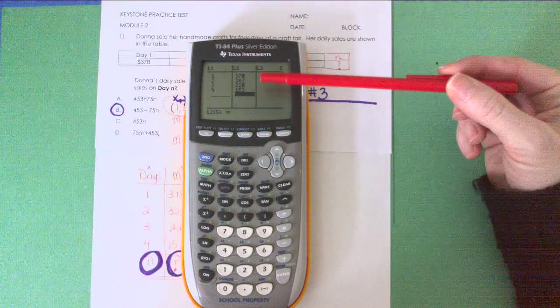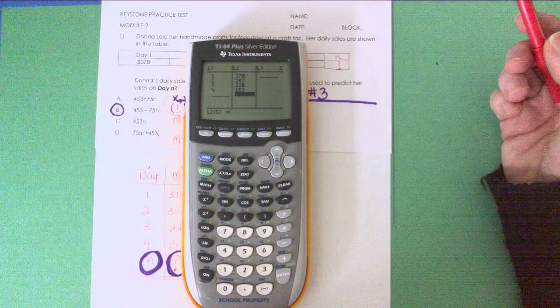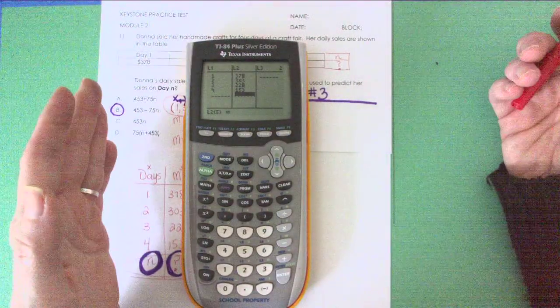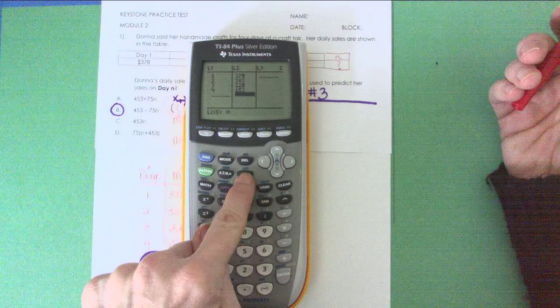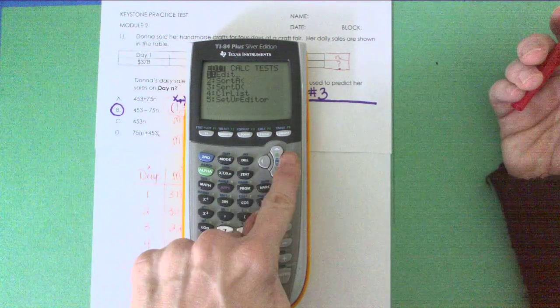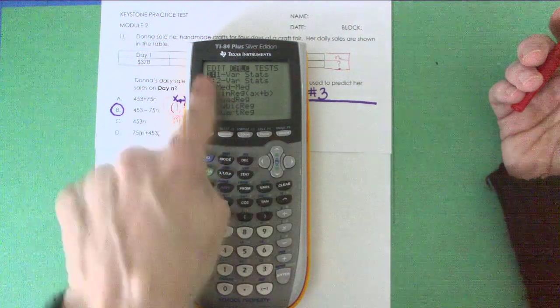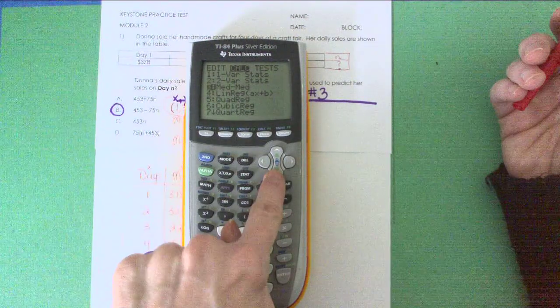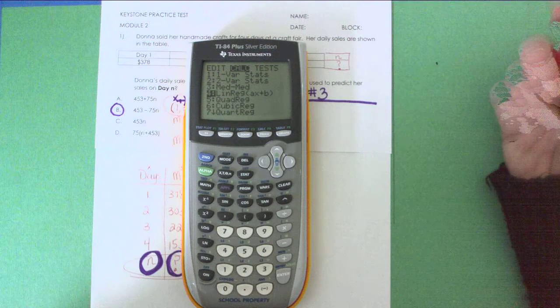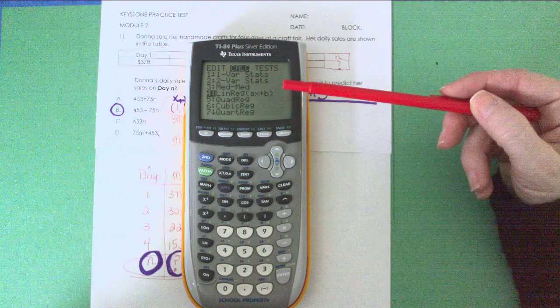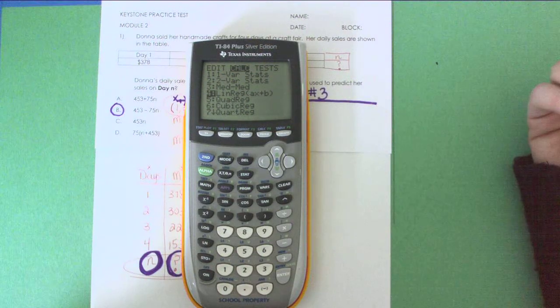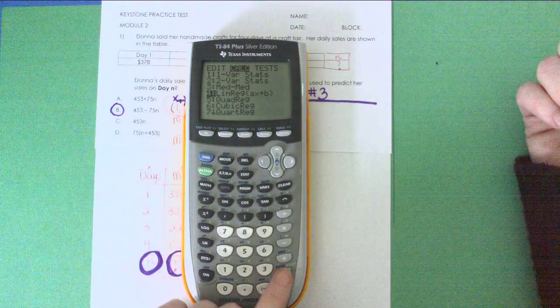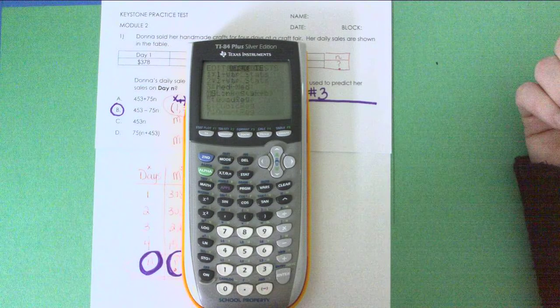The TI-84 will actually write the equation for me if I hit the right command. So once you have your points in from your table, you're going to press STAT again. But this time we're not going to edit, we actually want to calculate something. So we're going to arrow over to the right and come down and choose number four, linreg. Now this is AX plus B, which is the same as MX plus B. It's just the TI-84 uses A for the slope instead of M. We're going to hit enter.